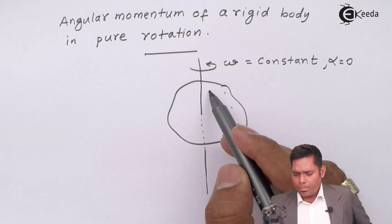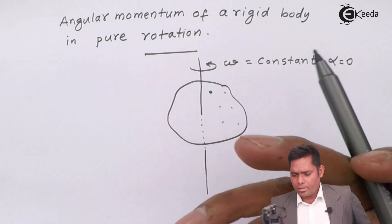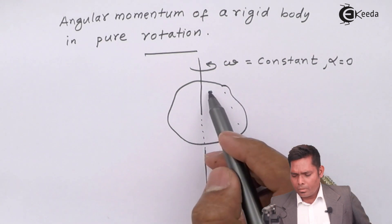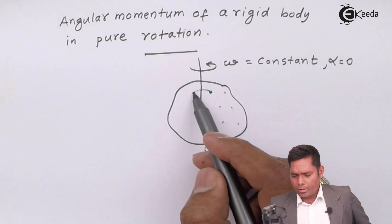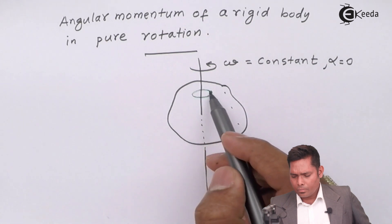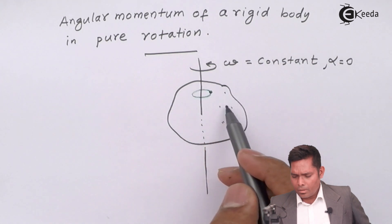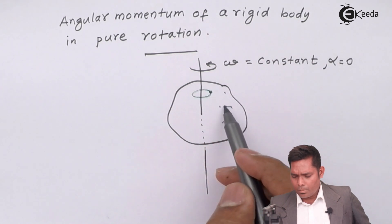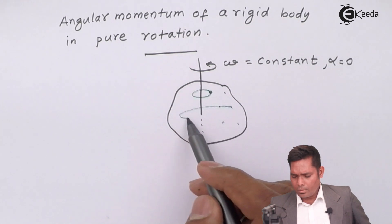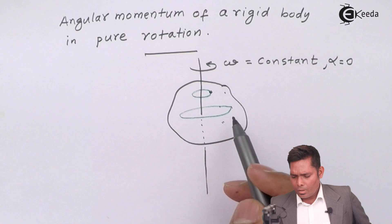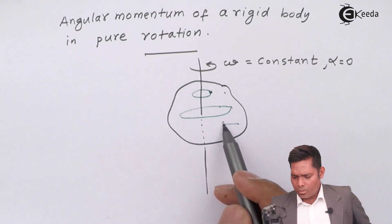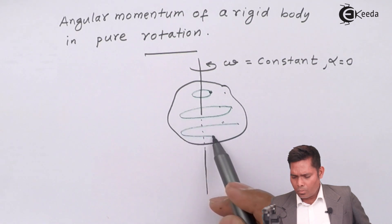When this body rotates, each particle will move in a circle — this particle will move in a particular circle, and so on and so forth.